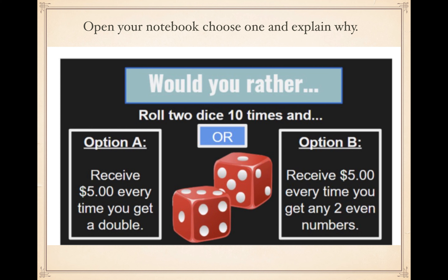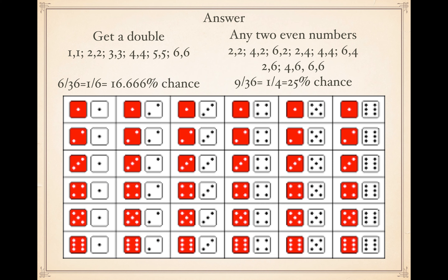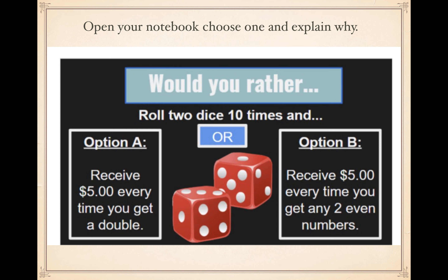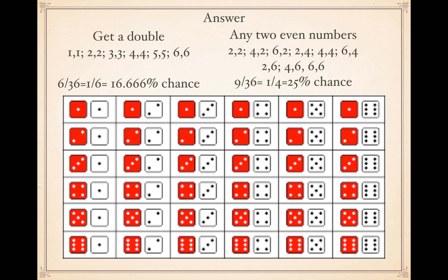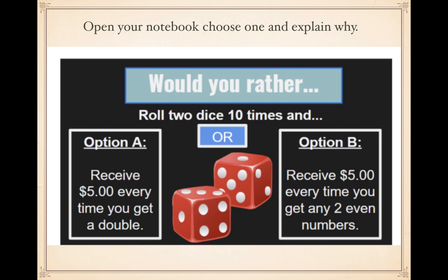If you have dice you can try this at home. The answer: to get a double you'd need one-one, two-two, three-three, four-four, five-five, or six-six — six chances out of 36, which is 16.66 percent. For any two even numbers you have more options: two-two, four-two, six-two, two-four, four-four, six-four, two-six, four-six, six-six — that's nine out of 36, or 25 percent. So option B gives a slightly higher chance of winning. Theoretically our chances are higher with any two even numbers rather than getting a double.